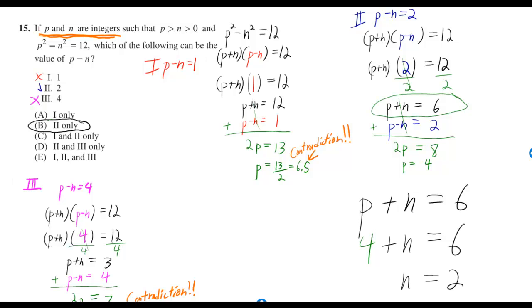And also, p is 4, n is equal to 2. Well, p is greater than n. So therefore, it doesn't contradict that. They're also greater than 0.